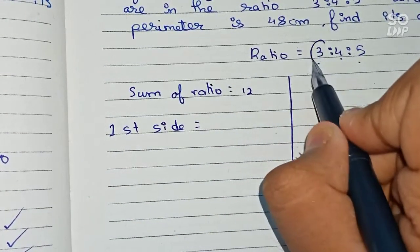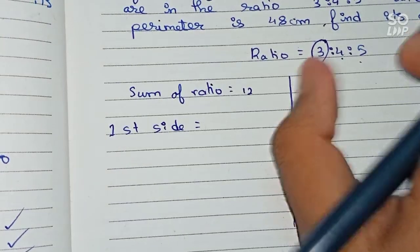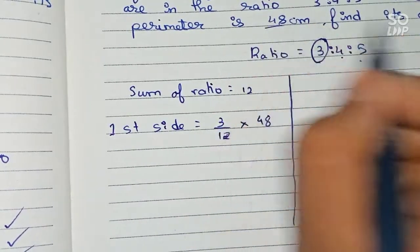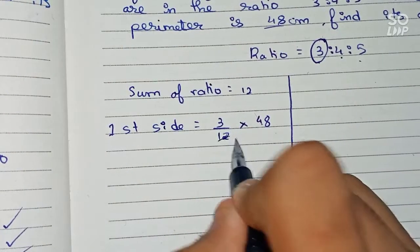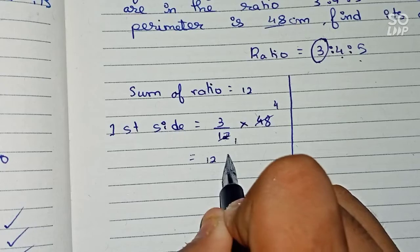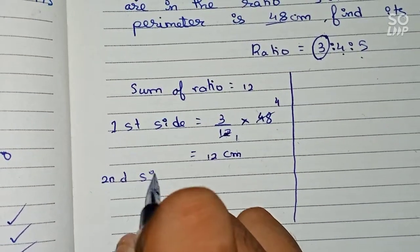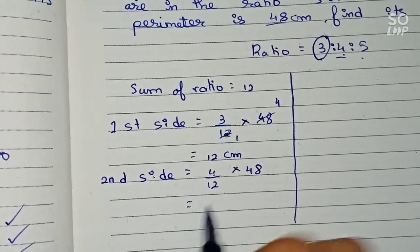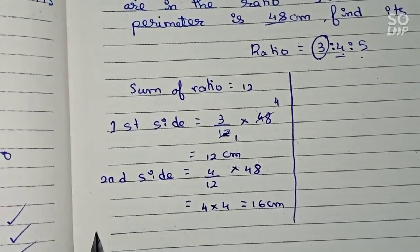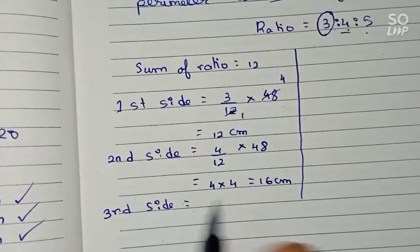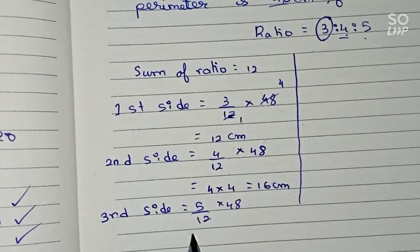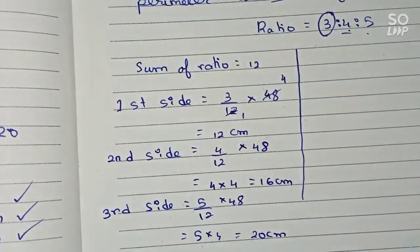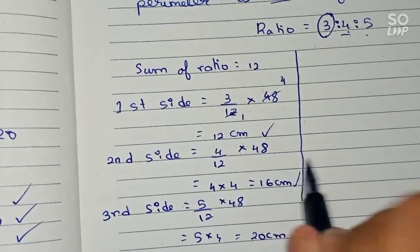The first side equals 3/12 multiplied by 48 — so 3 × 4 = 12 centimeters. The second side equals 4/12 multiplied by 48 — so 4 × 4 = 16 centimeters. The third side equals 5/12 multiplied by 48 — so 5 × 4 = 20 centimeters. So with this process we get the three sides: 12 cm, 16 cm, and 20 cm.